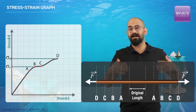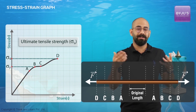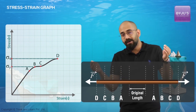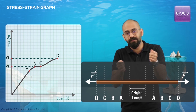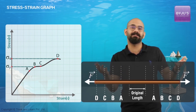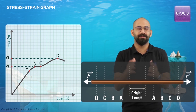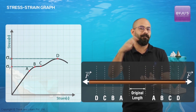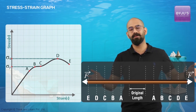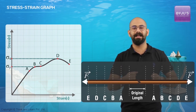Point D is called the ultimate tensile stress. Beyond D, even if you reduce the force, the strain will still increase — the elongation will still grow — because the wire is almost going to break. Finally, at point E, the wire can take no more and breaks completely; the strain is too much and it fractures.